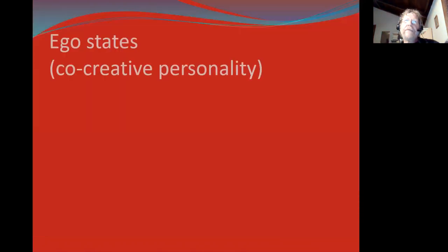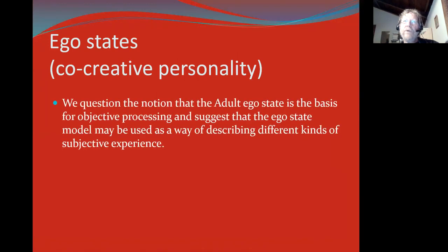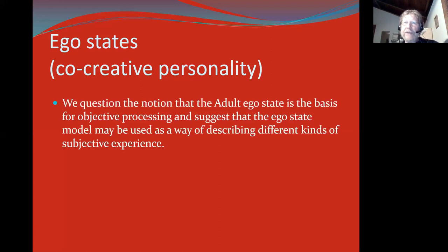In terms of ego states, this is a quote from the original article: we question the notion that the adult ego state is the basis for objective processing, and suggest that the ego state model may be used as ways of describing different kinds of subjective experience. The old parent-adult-child model, particularly when the adult is reduced to a computer program, seems very reductionistic. We also move away from the structural metaphor in which the ego state has been cast.